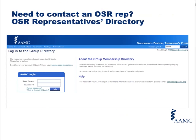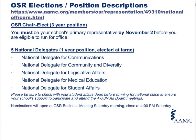There is an OSR representatives directory available through the website, so if you want to get in contact with the OSR rep from UPenn or UCLA, all you have to do is log in to the AAMC website and through your designation as an OSR you'll have access to the directory. Consider running in elections — this year we're asking that people put in thought before coming to the meeting, think about whether they'd like to run, and get feedback from their institution. The positions open for election this year in November are the OSR chair-elect position and the five national delegates.